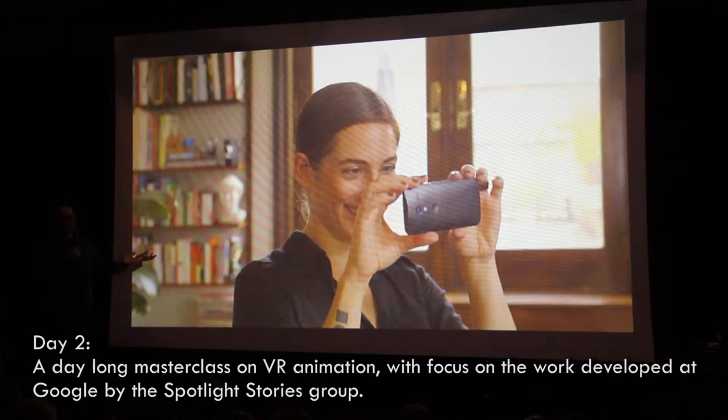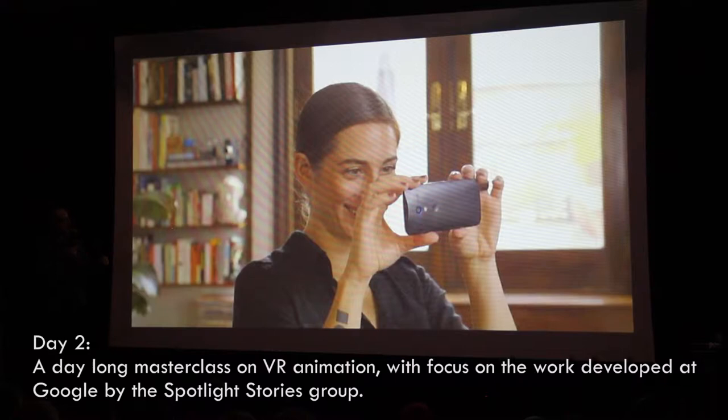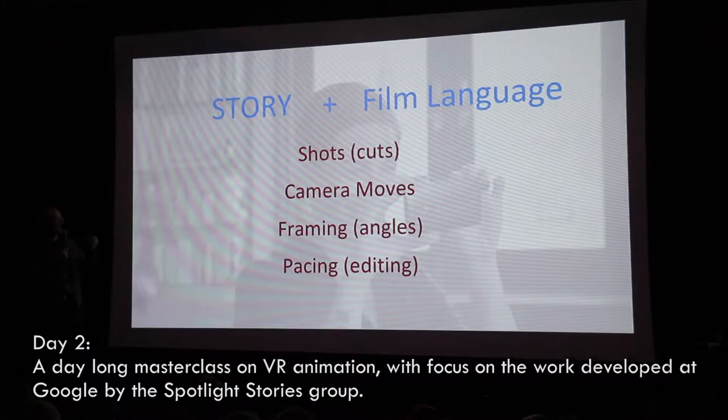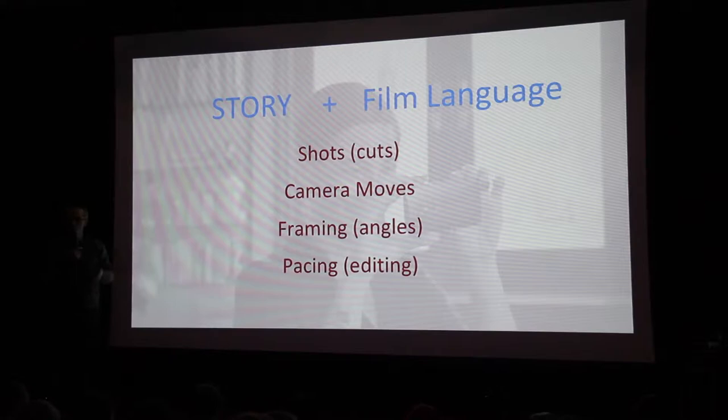Now we have the camera in the hands of the audience, which doesn't make any sense. And we've got to resolve that contradiction. Because what we've got then, next, is a story. Because that's what a film is — a film is a story plus film language. You use the film language to tell the story, and you've got shots, cuts, camera moves, angles that you're using, editing.